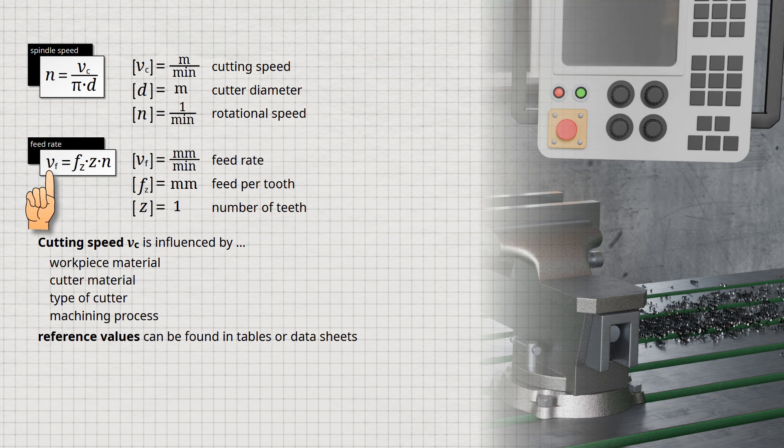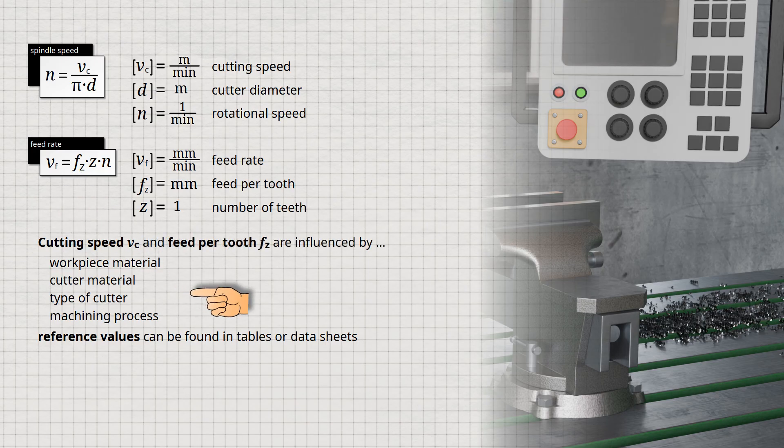To set the appropriate feed rate, the feed per tooth Fz must first be determined. This value also depends on the previously mentioned influencing factors, and reference values can be found in machinist handbooks. With the number of cutting edges Z and the feed per tooth Fz, the feed rate Vf to be set on the machine can be calculated using the previously determined spindle speed N.